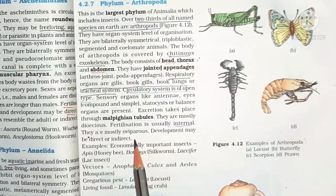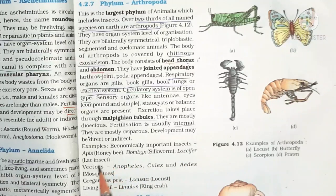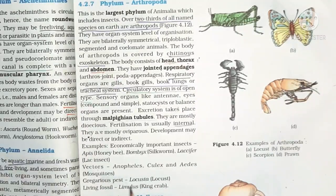Larval stage is sometimes present. Economically important insects include bees, honey bee, Bombyx (silkworm), and Lac insect. Vectors include Anopheles, Aedes mosquitoes. Gregarious pests like locust. Living fossil is Limulus — the king crab.